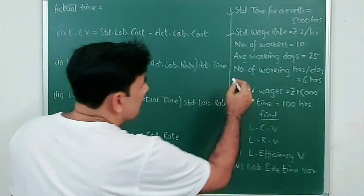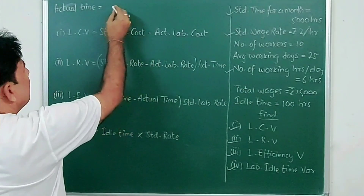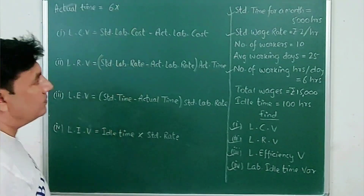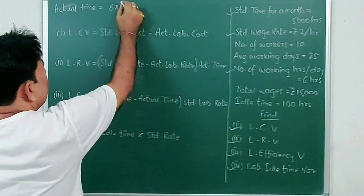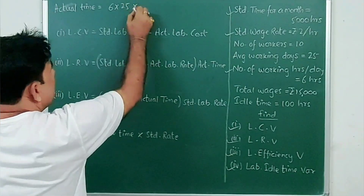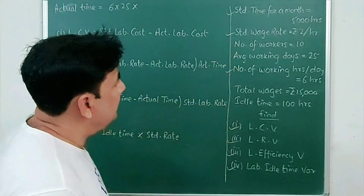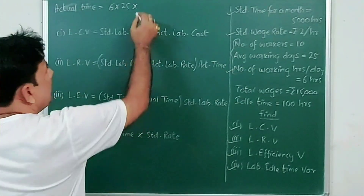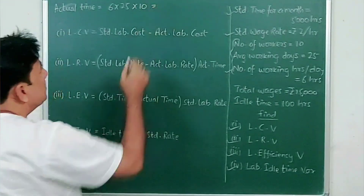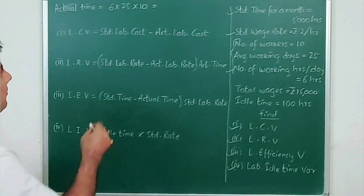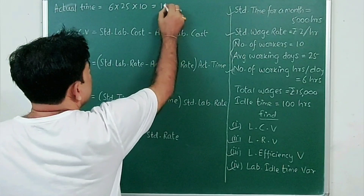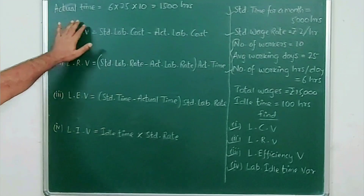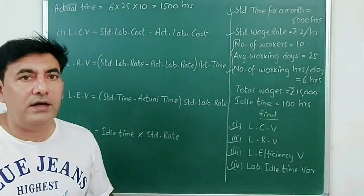Actual time equals 6 hours per day multiplied by 25 days multiplied by 10 workers. 6 into 25 is 150, and 150 into 10 gives actual time of 1500 hours.